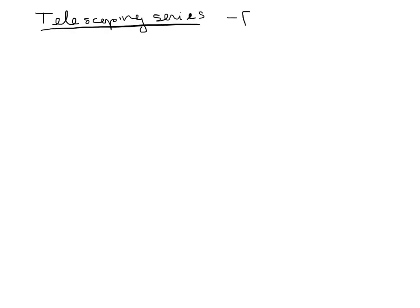The first topic is telescoping series. These are series where we can find a sum, usually, because we expand the series and then a bunch of stuff cancels, and it shrinks back down. It's kind of a telescoping effect on the series. For example, let's look at the sum from n equals 2 to infinity of 1 over n minus 1, minus 1 over n plus 1.